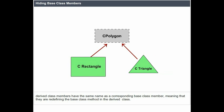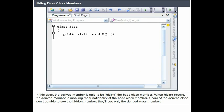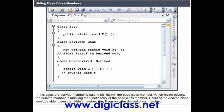Hiding base class members occurs when derived class members have the same name as a corresponding base class member, meaning they are redefining the base class method in the derived class. When using an instance of the derived class, you invoke the derived class's specialized behavior and not the behavior of that method in the base class. In this case, the derived member is said to be hiding the base class member, masking its functionality. Users of the derived class won't be able to see the hidden member — they will see only the derived class member.